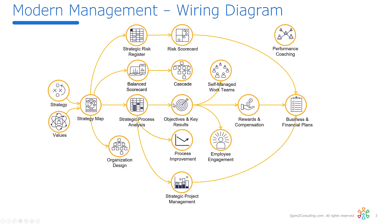From there we can build our OKRs — our objectives and key results. That same strategic process analysis would also allow us to do process improvement, because we can find out which processes have the biggest impact on our strategy and where we could get the best return on investment for improving those processes. Based on that, we can then begin doing strategic project management — managing your projects in light of their strategic impact, not ROI.